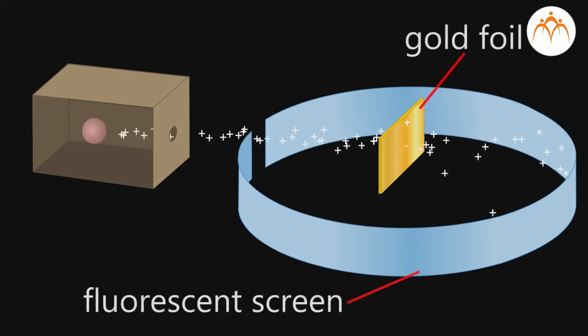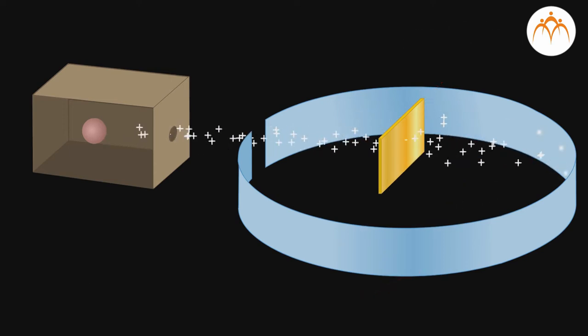A fluorescent screen of zinc sulphide was placed around the gold foil to observe the path of alpha particles. Alpha particles cannot be seen with naked eye, but whenever an alpha particle hits the fluorescent screen, we observe a flash of light.